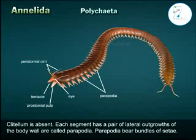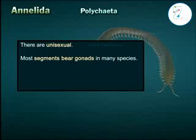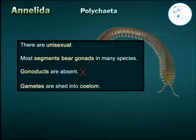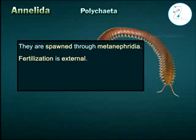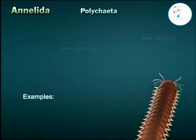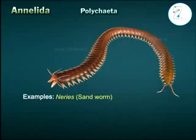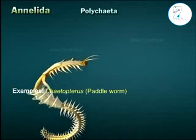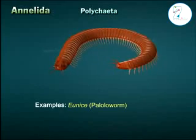Parapodia bear bundles of setae. They are unisexual. Most segments bear gonads in many species. Gonoducts are absent; gametes are shed into the sea and spawned through metanephridia. Fertilization is external and development includes a trochophore larva. Examples: Nereis (sandworm), Chaetopterus (paddle worm), Eunice (palolo worm).